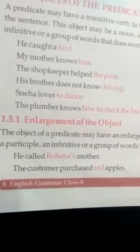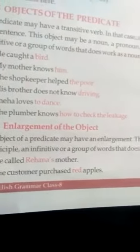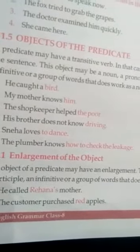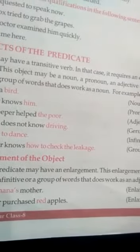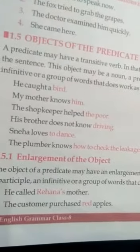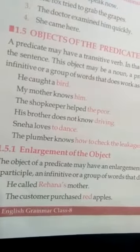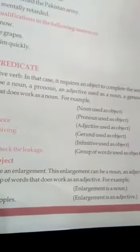Enlargement of the object. The object of a predicate may have an enlargement. This enlargement can be a noun, an adjective, a participle, an infinitive, or a group of words that does work as an adjective. For example: 'He called Rihanna's mother' — enlargement is a noun. You see, Rihanna's is an enlargement of the noun. 'The customer purchased red apples' — enlargement is an adjective. 'They caught the wandering dogs' — enlargement as a participle.